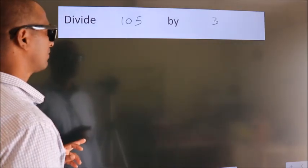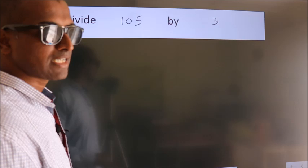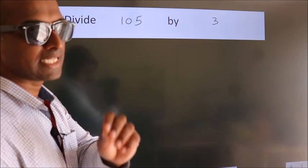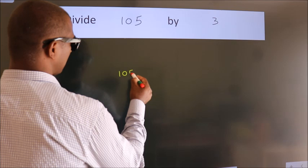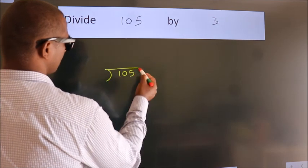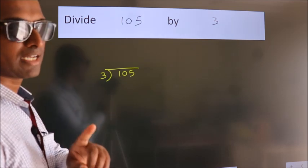Divide 105 by 3. To do this division, we should frame it in this way: 105 here, 3 here. This is your step 1.